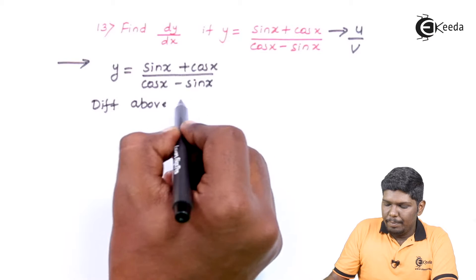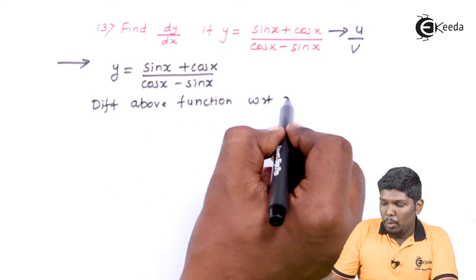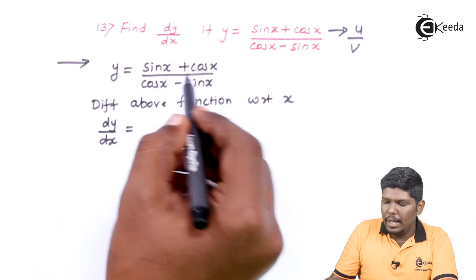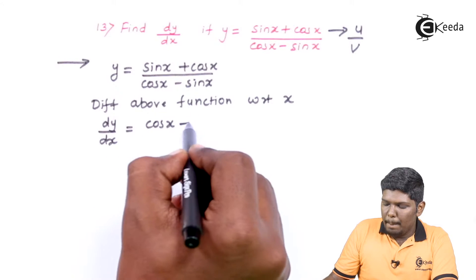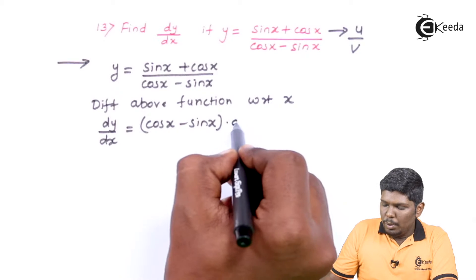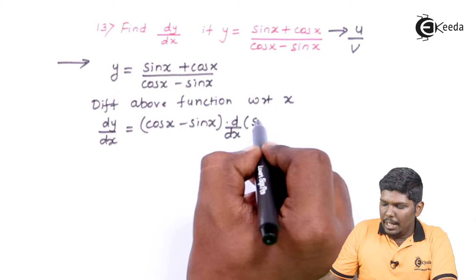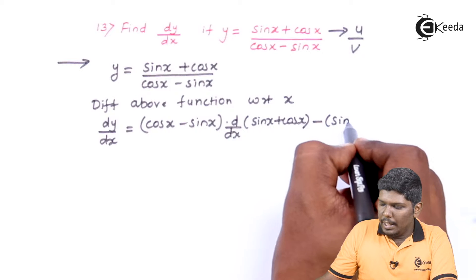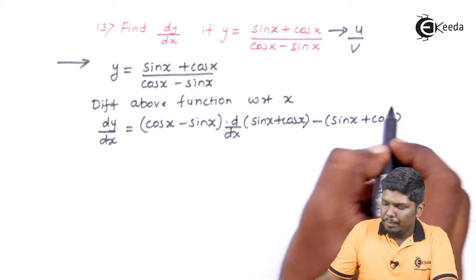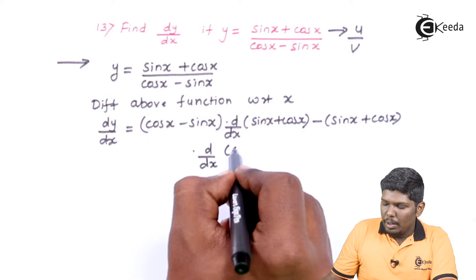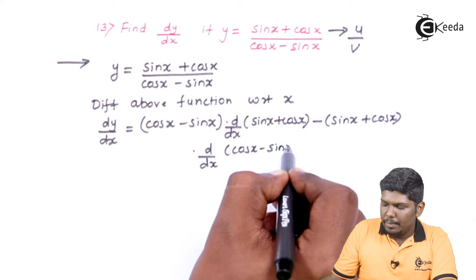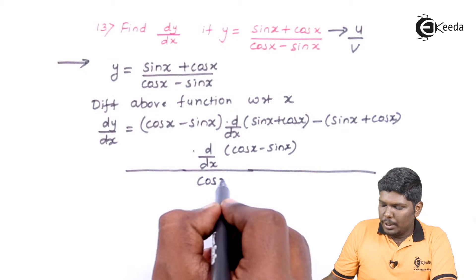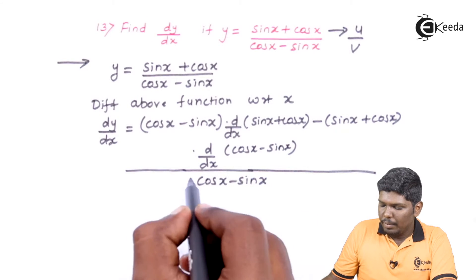Differentiating the above function with respect to x, the derivative of y will be dy by dx. Here we have v, that is cos x minus sin x, into d by dx of u, that is sin x plus cos x, minus u, that is sin x plus cos x, into d by dx of v, that is cos x minus sin x, all upon v squared, which is cos x minus sin x the whole square.